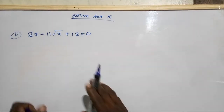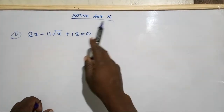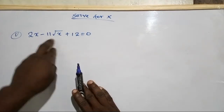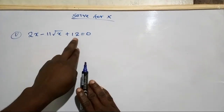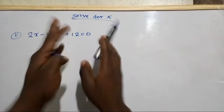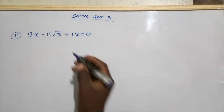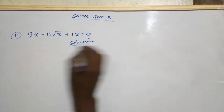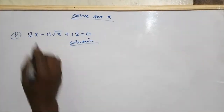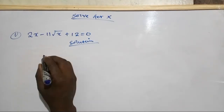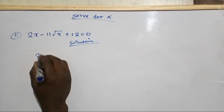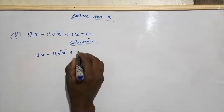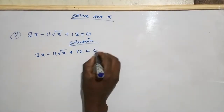We have an interesting question. For x we have 2x minus 11 root x plus 12, which equals zero. We have to solve for x. Let's get started. We write the question: 2x minus 11 root x plus 12 equals zero.